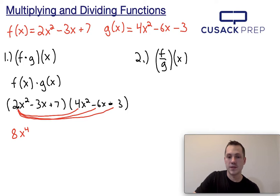Now then I do 2x squared times negative 6x, well 2 times negative 6, that's going to be negative 12. X squared times x, well this is like an x to the first, so that's going to be x cubed. Finally, I do 2x squared times negative 3, which is going to give me minus 6x squared.